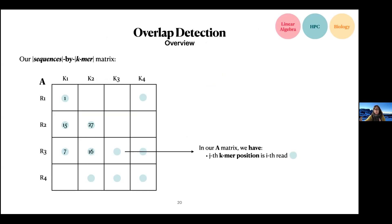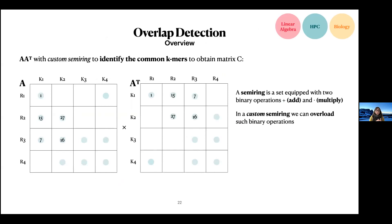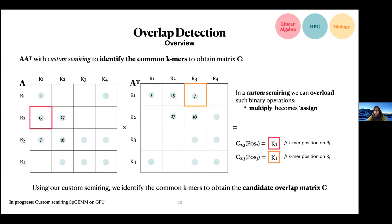Once we have created our sparse k-mers-by-reads matrix, we also have its transpose: a sequences-by-k-mers matrix where each non-zero is the position of the k-mer in the reads. These two matrices are distributed across a 2D processor grid, and we multiply them using a semi-ring instruction. In a standard matrix multiplication we have an add and a multiply operation; using the semi-ring abstraction, we can overload these with custom operations. In the multiply operation, we perform an assignment: C_{2,3} represents the non-zero in the output matrix identifying the relationship between read two and read three, accumulating the k-mer positions they have in common.